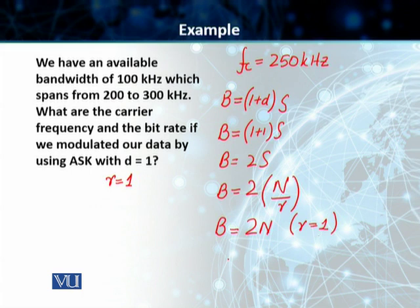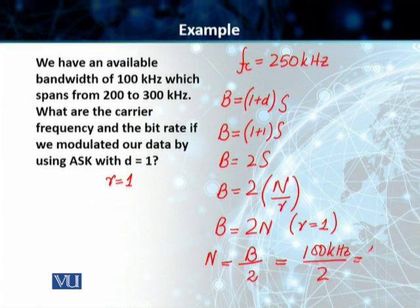And this comes out to be, from this discussion, our N is equal to the bandwidth divided by 2, which is equal to 100 kHz divided by 2, and so our data rate is equal to 50 kbits per second.